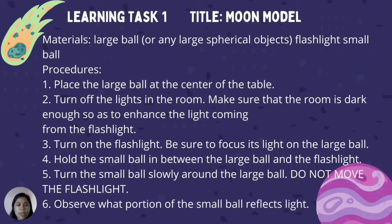Procedures: Number 1 — Place the large ball at the center of the table. Number 2 — Turn off the lights in the room. Make sure the room is dark enough to enhance the lighting from the flashlight. Number 3 — Turn on the flashlight and focus its light on the large ball. Number 4 — Hold the small ball between the large ball and the flashlight. Number 5 — Turn the small ball slowly around the large ball without moving the flashlight, and observe what portion of the small ball reflects light.